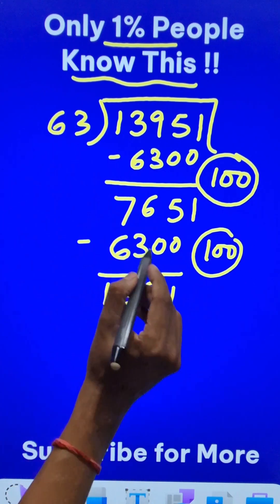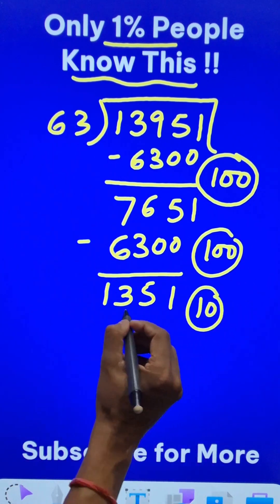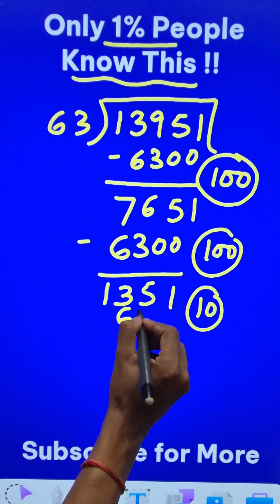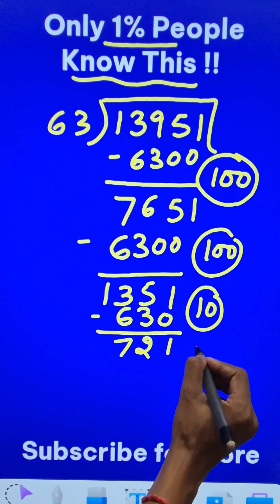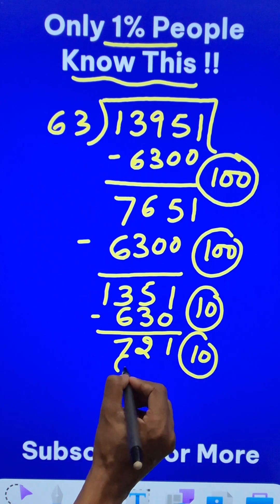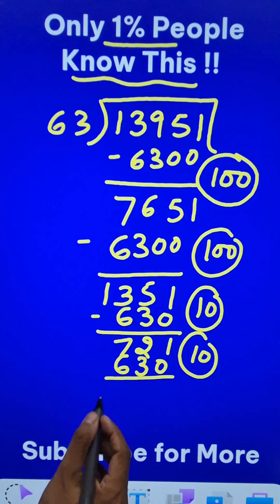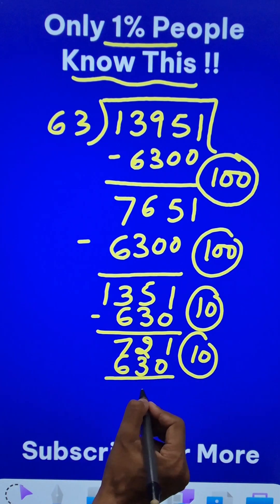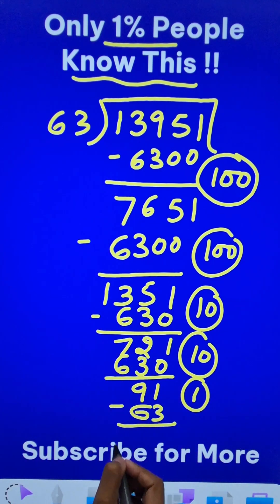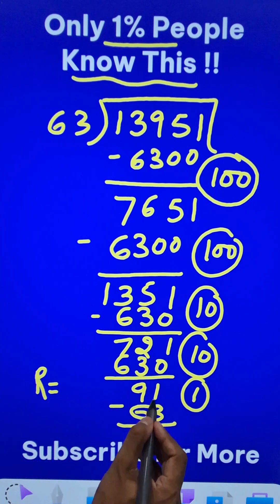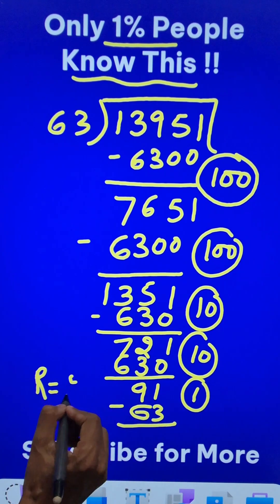Now it doesn't go 100 times, but it definitely goes 10 times. So if I do 10 times 63, it is 630. So when I subtract it, I get 721. Another 10 times gives me 630 and that gives me the difference as 91. So it is 1 times 63 and finally the remainder for the question will be the difference of these two, that is 28.